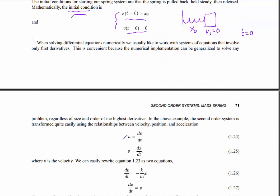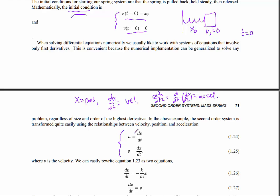What's happened here is he has split the original equation up into two different equations with physical significance. If x is the position, then dx/dt is the velocity. And d²x/dt², which is the same as d/dt of dx/dt - that's the second derivative - that's the same thing as the acceleration.